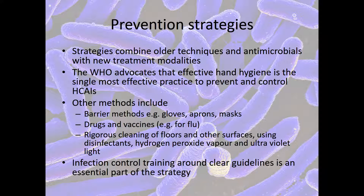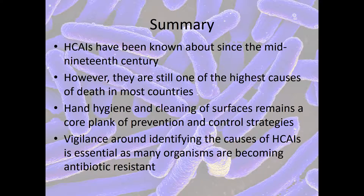Prevention strategies combine older techniques such as handwashing and the use of antimicrobials with new treatment modalities. The WHO advocates that effective hand hygiene — via soap and water or alcohol rubs — is the single most effective practice to prevent and control healthcare-associated infections. Other methods include barrier methods such as gloves, aprons, masks, and face shields; use of drugs and vaccines; and for health workers, having the flu vaccine each year is important. Rigorous cleaning using specific disinfectants, hydrogen peroxide vapour, and ultraviolet light are also used. Infection control training for health providers around clear guidelines is absolutely vital, and training has been shown to particularly improve hand hygiene.